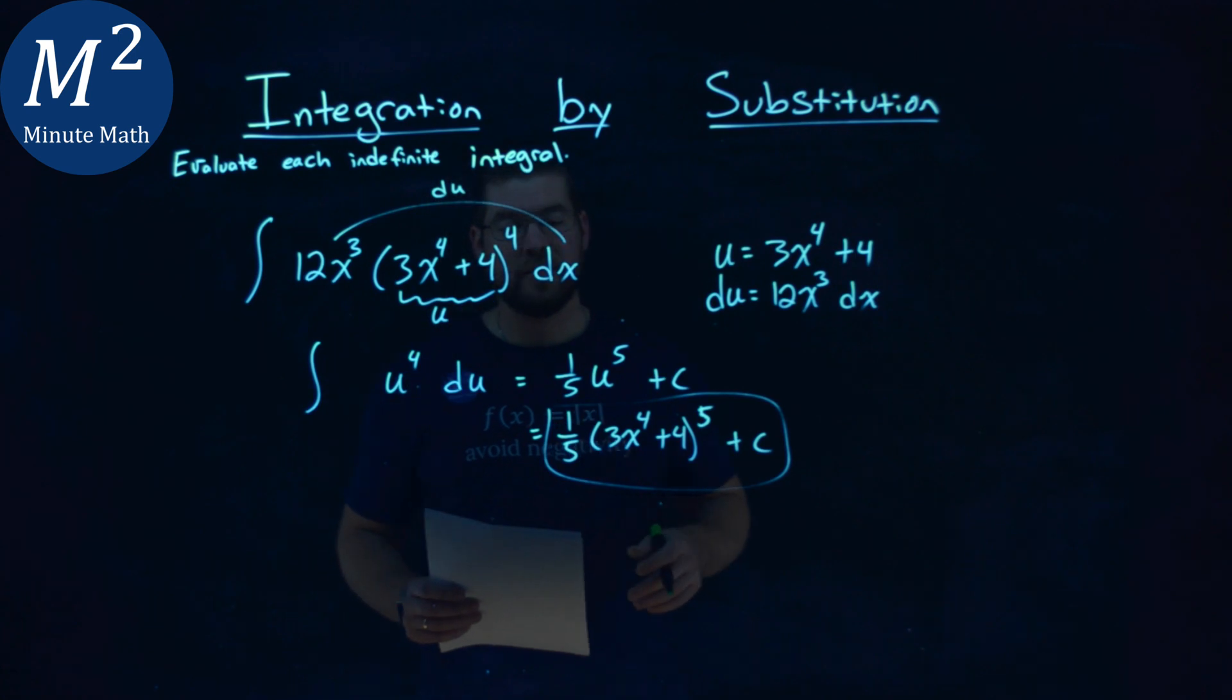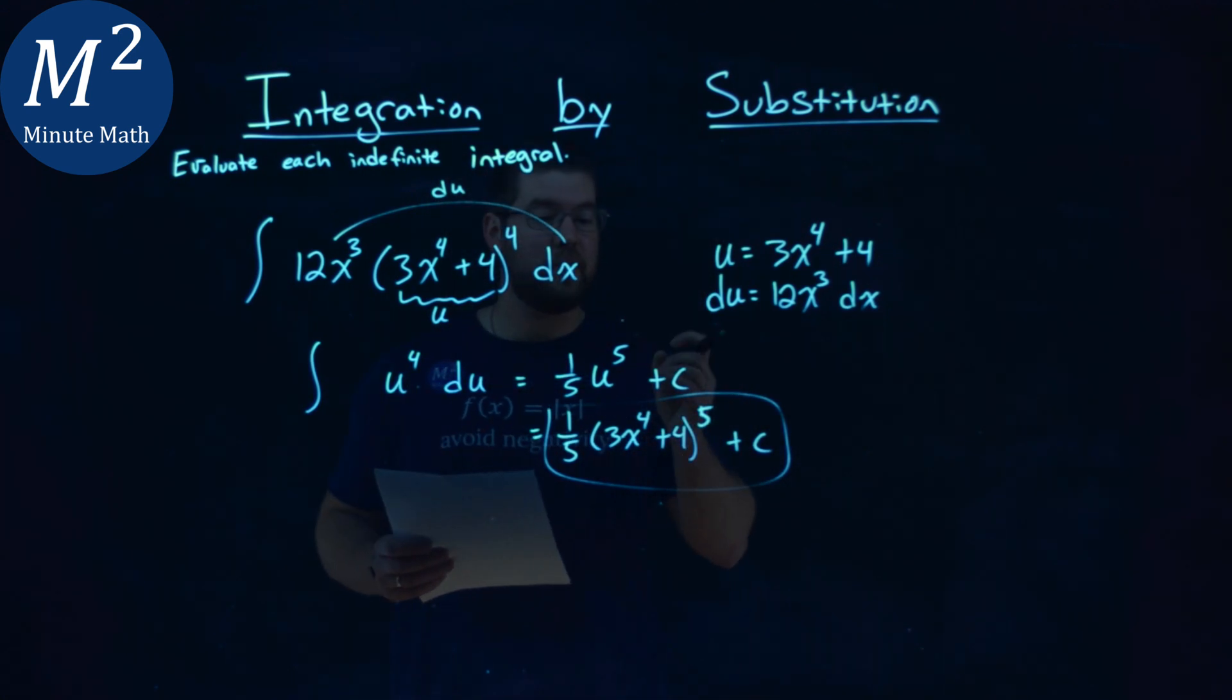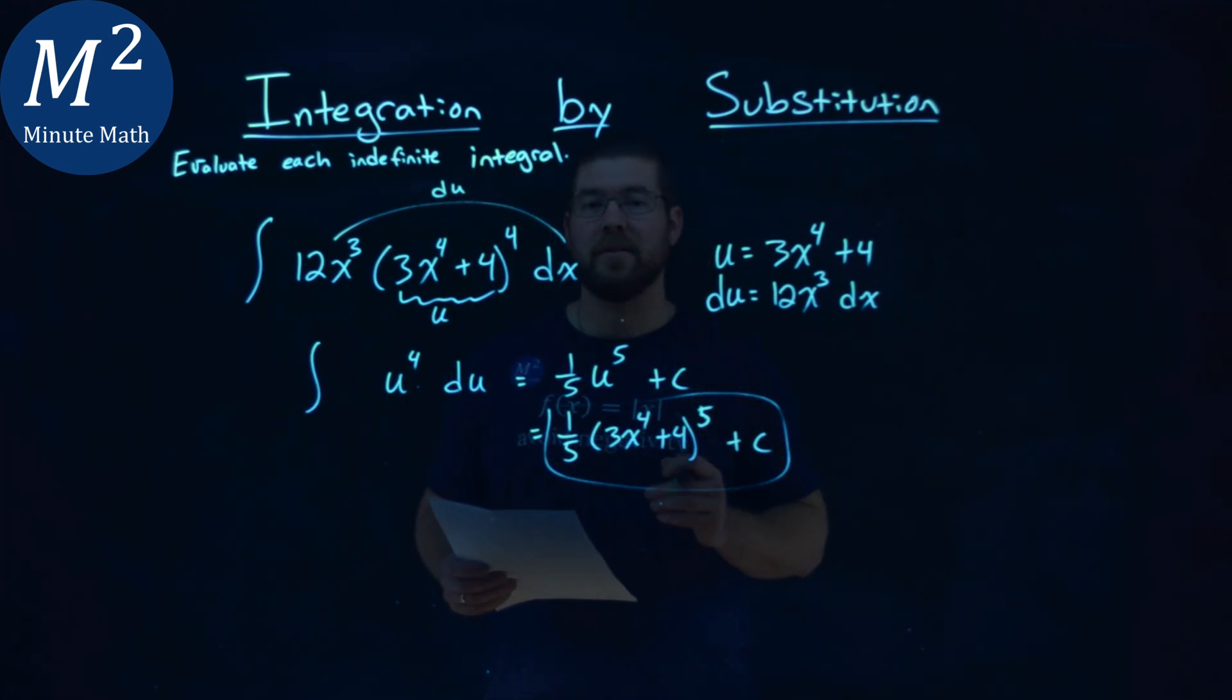So again, our final answer here is 1/5 times (3x⁴ + 4)⁵ + c.